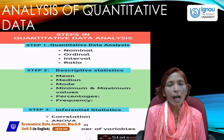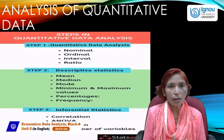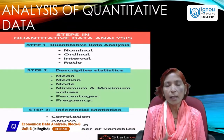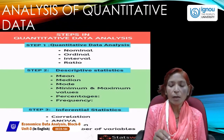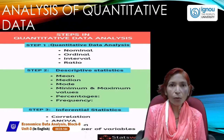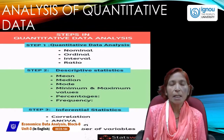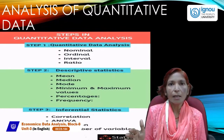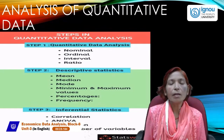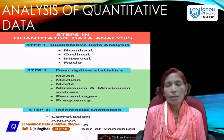If we have raw data, first of all we will arrange it in ascending or descending order, then we will put in the values and make tally bars. In tally bars we can write in numbers — that is called frequency. The third step is inferential statistics.